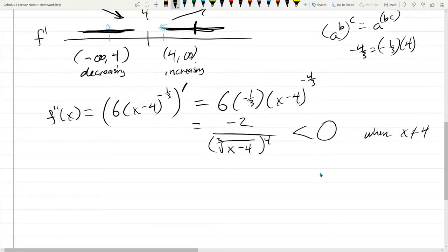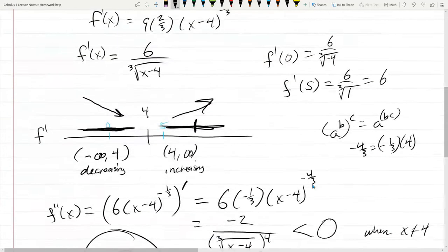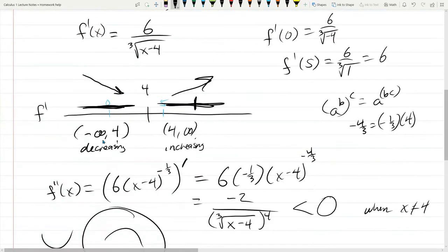What does that mean about concavity? Concave up, concave down. We're negative, so we're always going to be concave down, frowny face. And that's both sides of 4. So you could do f double prime, and you would have negative, negative. But for f double prime, that means concave down, concave down, because they're both negative.